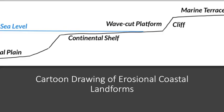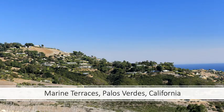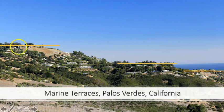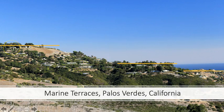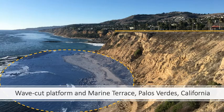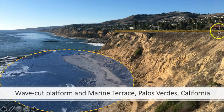This cartoon drawing shows erosional coastal landforms including the wave-cut platform, marine terrace, and the cliff connecting the two. This photograph here is from Palos Verdes in Southern California, showing three marine terraces — this being the most recent and this being the oldest. Erosion since being uplifted has rounded them somewhat, but you still see a very flat surface representing the ancient wave-cut platform. Another photograph from the Palos Verdes area shows the active wave-cut platform and the most recent marine terrace.